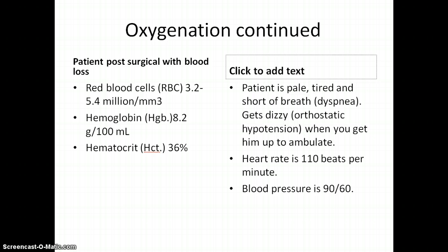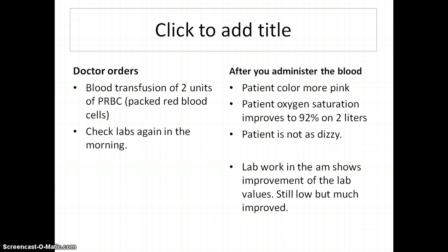They might be dizzy, which we call orthostatic hypotension, and the heart goes faster or has tachycardia trying to compensate, getting more blood out to the tissues. Because there's not as much blood to pump around, the blood pressure is going to be lower. The doctor says give them two units of packed red blood cells and check the labs again in the morning. After the blood is given, you notice that your patient looks a lot more pink. Their oxygen saturation has improved up to 92% and even though that's within normal range, you still leave oxygen on at two liters.